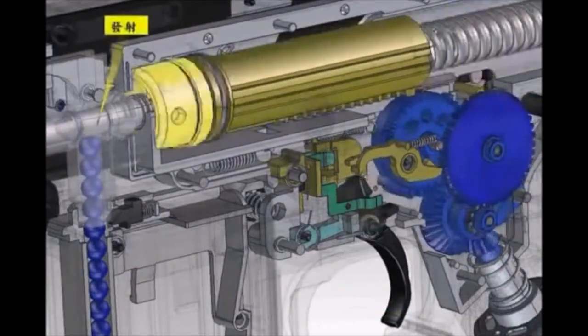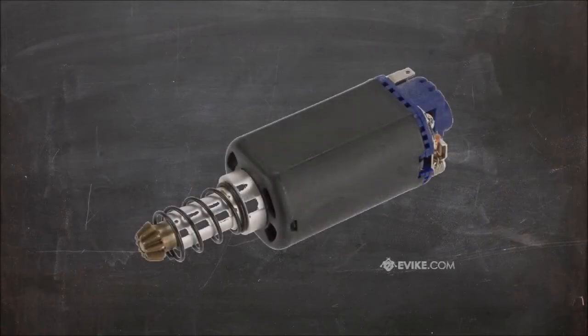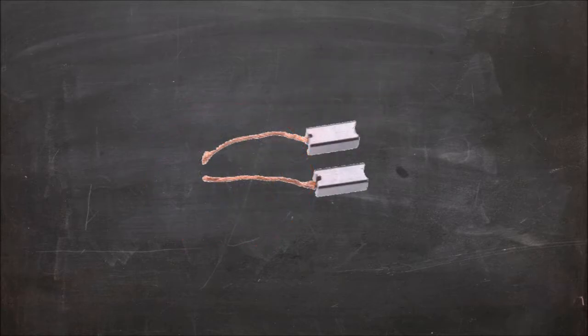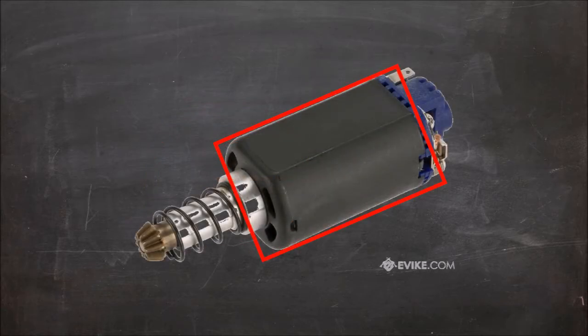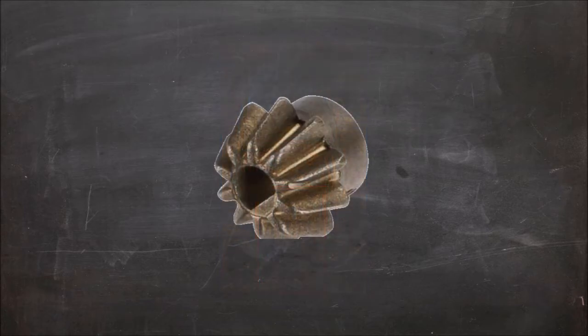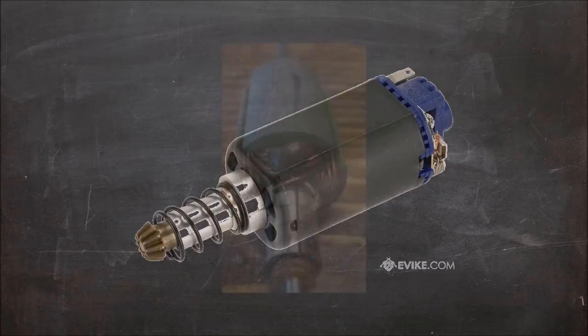The motor consists of the end bell where the wiring connects, the brushes (because all airsoft motors are brushed, don't ask), the motor can that holds the internals, the magnets that create the spin, the armature that spins, and the pinion gear at the end of the armature.